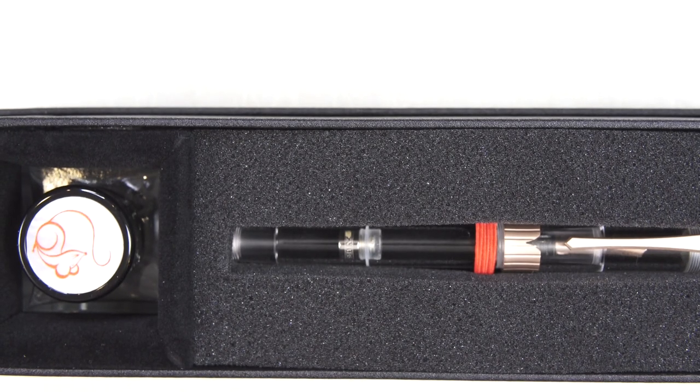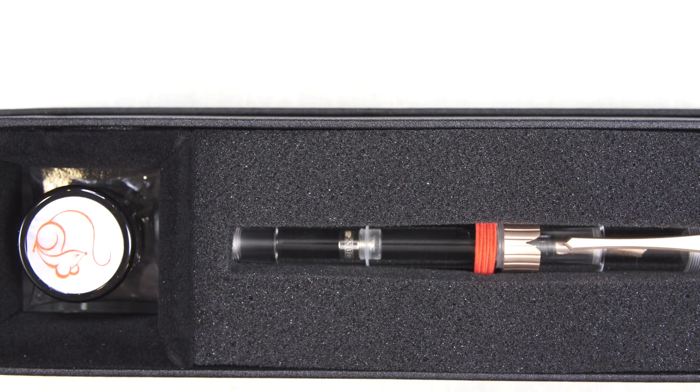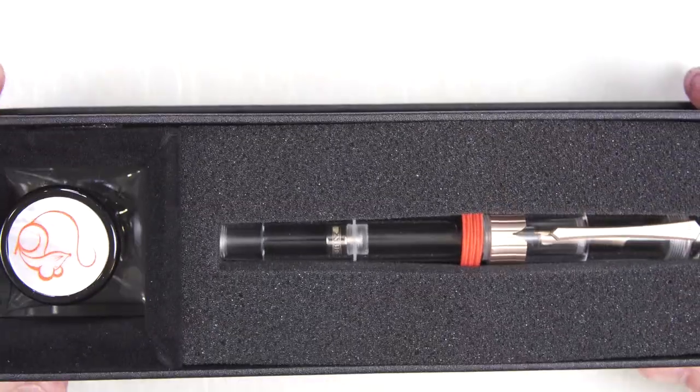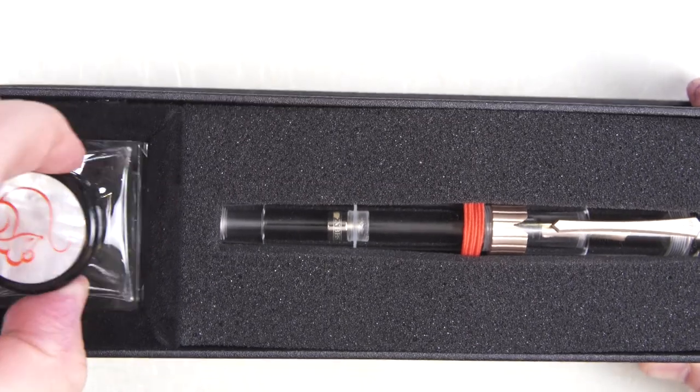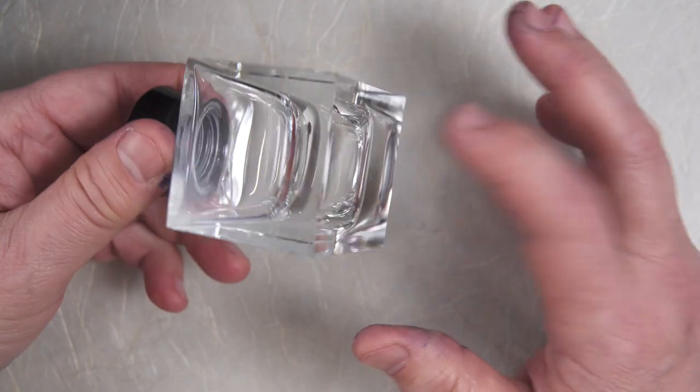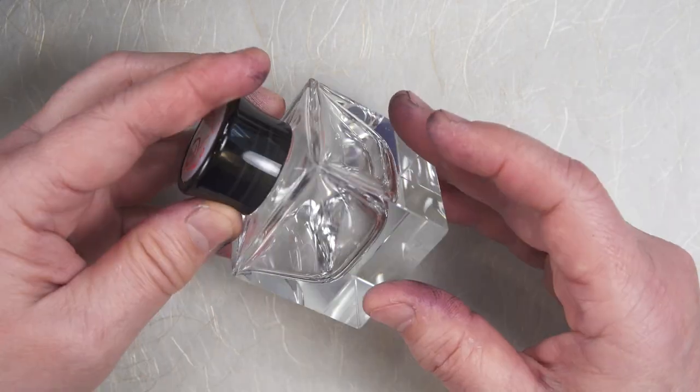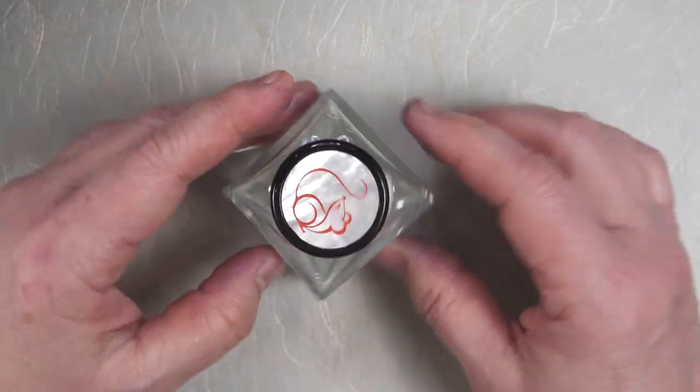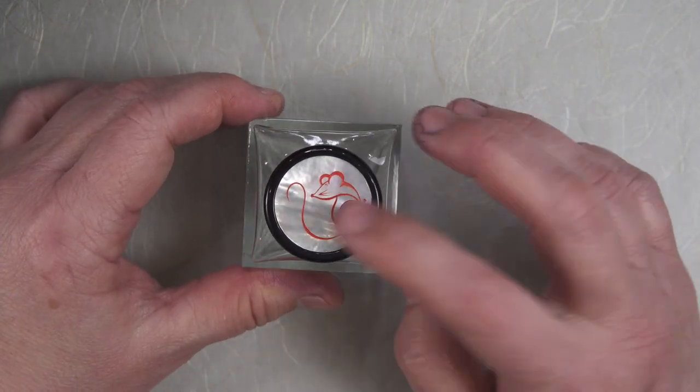Inside the super cushion box is the pen and an ink well or ink bottle. The ink bottle has a picture of a rat on it and it's repeated throughout the pen. It's a heavy bottom glass bottle with a really nice cap.